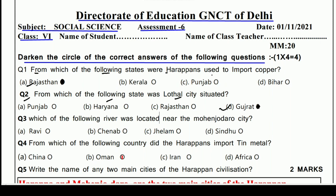Next question: Which of the following rivers was located near Mohenjo-Daro city? Near which river was Mohenjo-Daro located? Options are Ravi, Chenab, Jhelum, and Sindhu. The right answer is Sindhu.